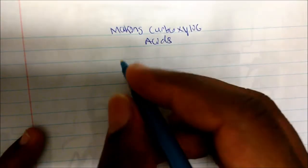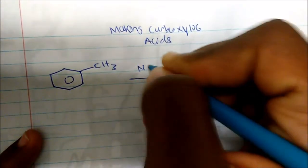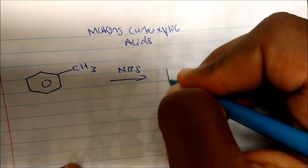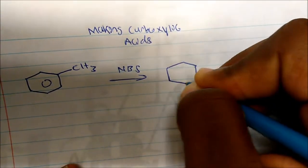The reagent that you guys should know: if I take toluene and I add NBS, I will get radical addition.